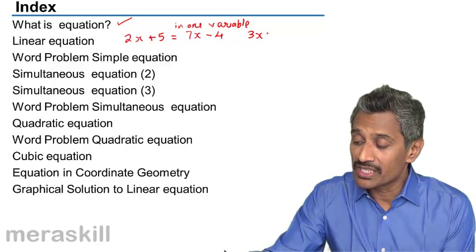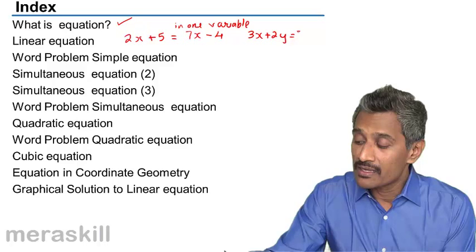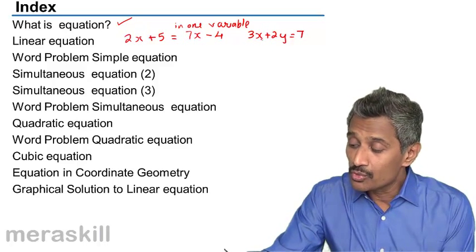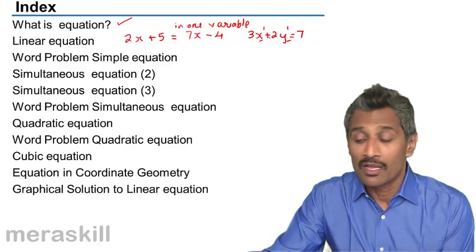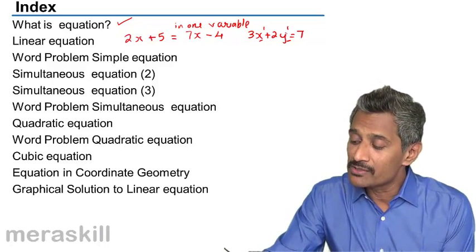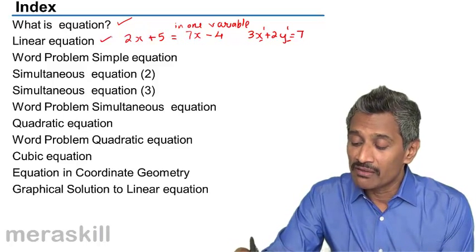If you take something like this, 3x plus 2y is equal to 7, there are two unknowns, x and y, but both have been raised to the power 1. So whenever the variable has been raised to power 1, we call it as a linear equation.